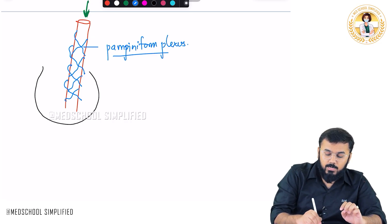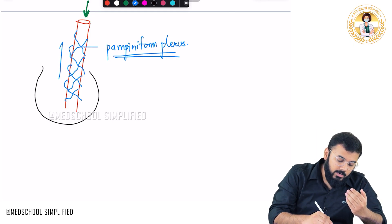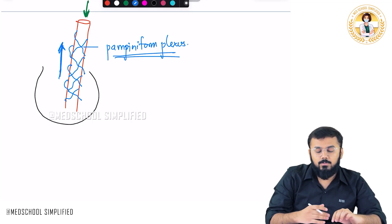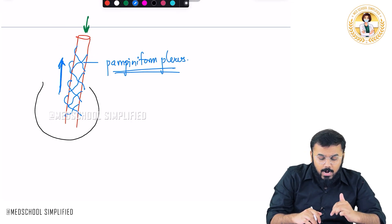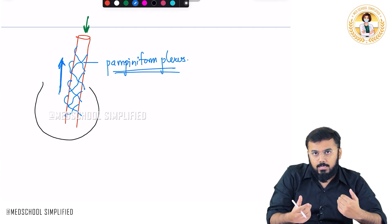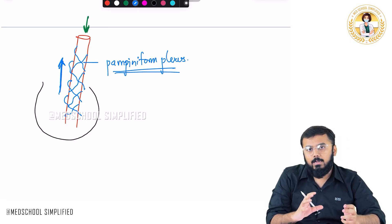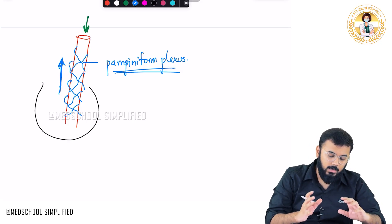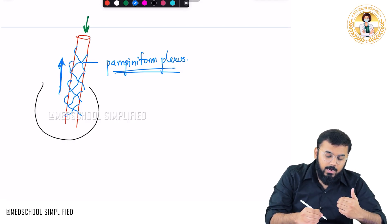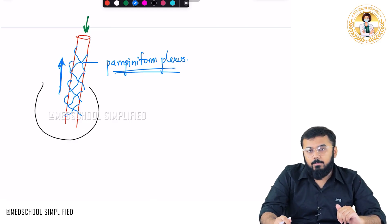The veins take the blood away from the testes. The temperature within the veins is less compared to the temperature within the arteries - arterial temperature is high, venous temperature is low. The temperature in the arteries and veins are exchanged, and as a result, the testes are maintained under a specific normal temperature. This kind of mechanism is called the counter current mechanism.